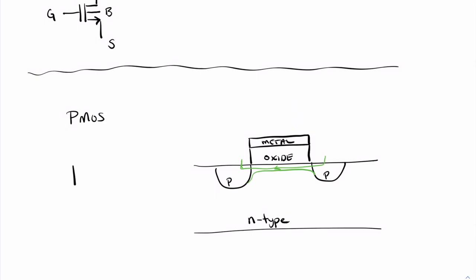And its symbol is with the arrow pointing in. So this would be the source, the body connection, our drain connection, and our gate connection, there.